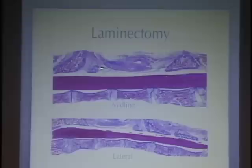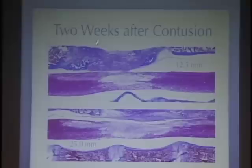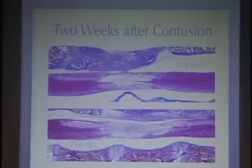Here is the spinal cord after we have removed the lamina — the bone covering the dorsal spinal cord. This is what happens when we drop a 10-gram weight onto the spinal cord and wait two weeks. What was completely red before now shows a big hole where the injury is, with significant loss of cells in the surrounding area. This is the 12.5-millimeter weight drop — a 10-gram weight dropped only 12.5 millimeters.